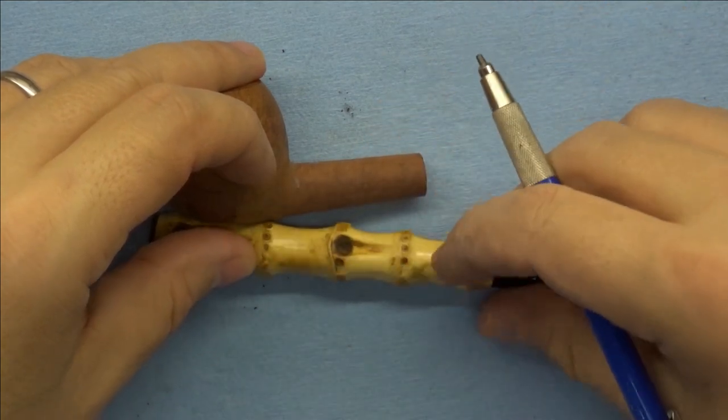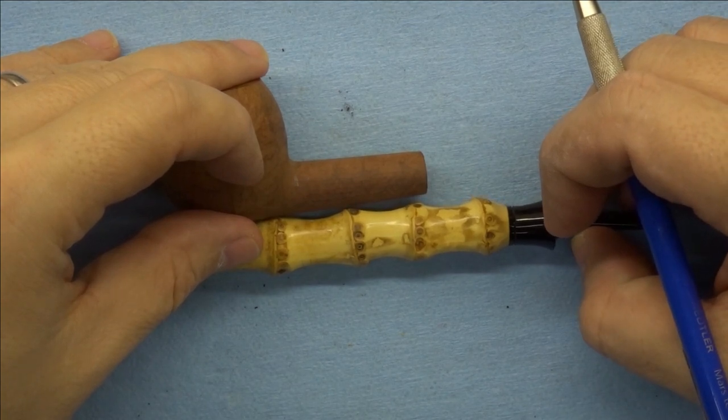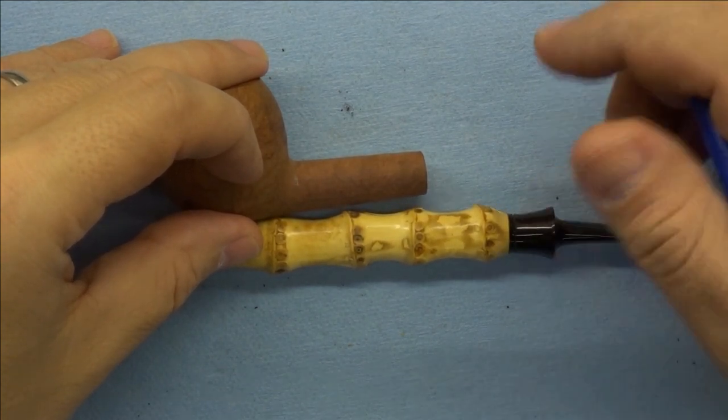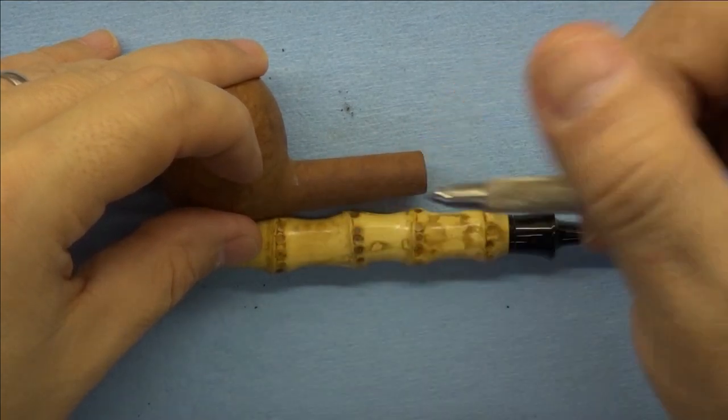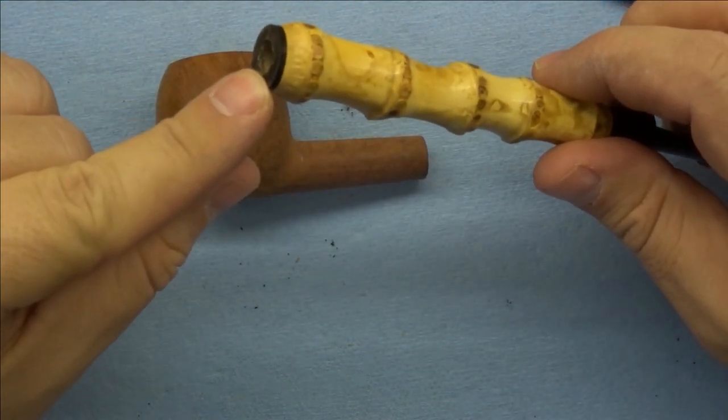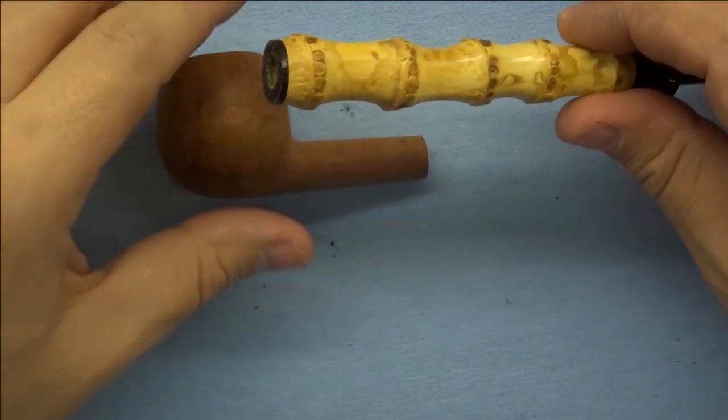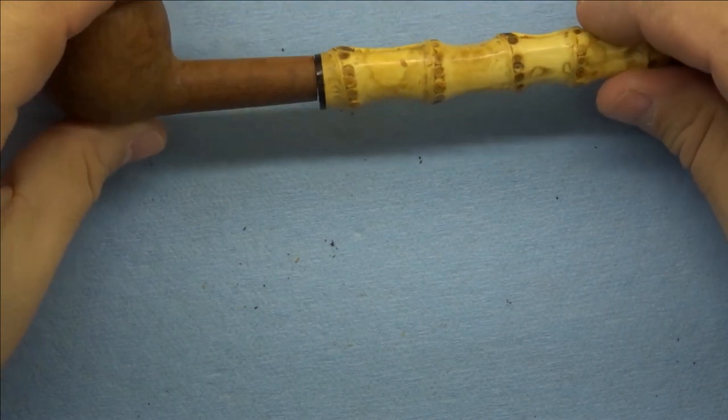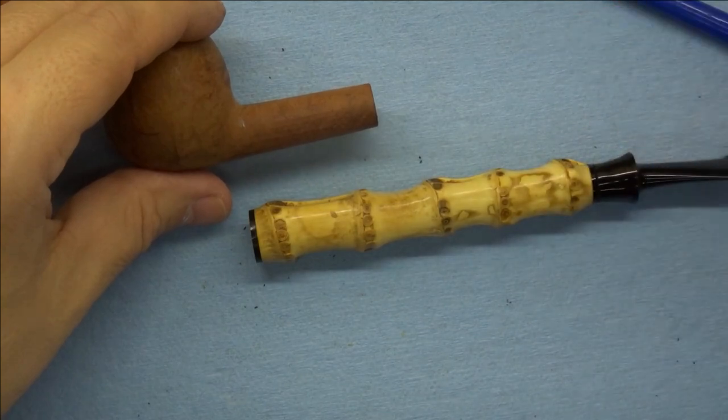I've already done some measurements and that'll work out pretty well so we'll just have to see if we can make the connection. So I think the next step then is going to be to cut the bamboo, get it faced off flat and make the ebonite transition piece that will go that will attach to the bamboo and can then be attached fit to fit flush with the stummel.